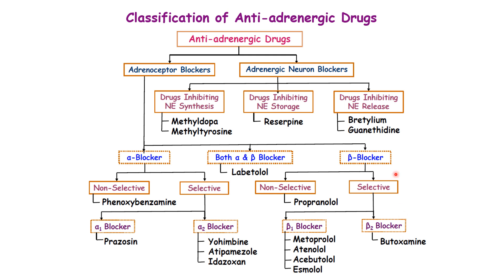Another classification is the adrenergic neuron blockers. They do not block the receptor directly; they act on the adrenergic neuron that releases norepinephrine, preventing its release. Examples include drugs that inhibit norepinephrine synthesis, drugs that inhibit norepinephrine storage (reserpine), and drugs that inhibit norepinephrine release from the adrenergic neuron — examples being bretylium and guanethidine.